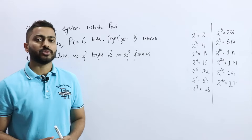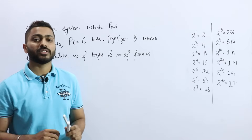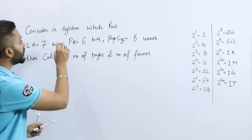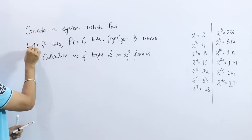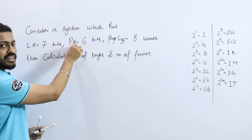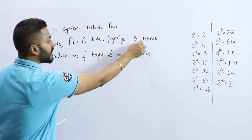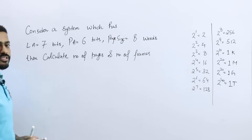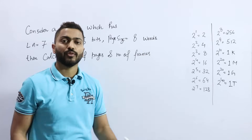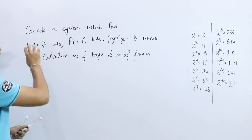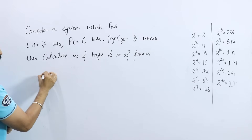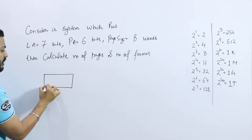Let's look at a question that will help you understand the concept of paging. The question states: consider a system in which the logical address (LA) is 7 bits, the physical address is 6 bits, and the page size is 8 words. We need to calculate the number of pages and the number of frames.